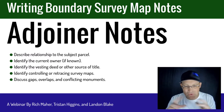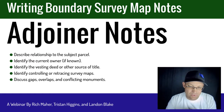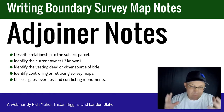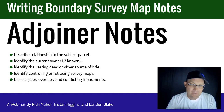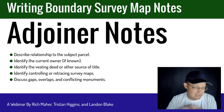Adjoiner notes. Those are notes about the parcels that touch your parcel — the subject parcel that you're surveying. Those are called adjoiners. It's not something a lot of other surveyors do, but it's a really vital part of having a bulletproof boundary resolution. You need to look at your adjoiners. You need to think about gaps and overlaps and conflicts with the adjoiners.